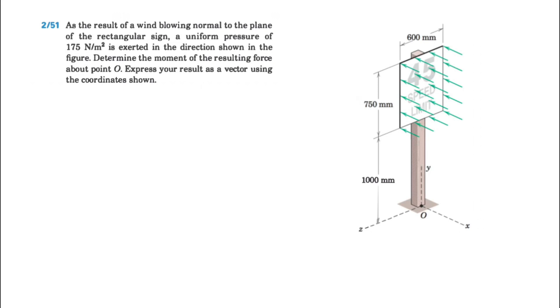Okay, welcome back guys. We're going to be solving another question in today's video, question 51 from the second chapter of the Merriam textbook. In this one we have a wind blowing normal to the plane of the rectangular sign, and we have a uniform pressure of 175 Newtons per meter squared. We need to determine the moment of the resulting force about point O and express the result as a vector using the coordinates shown.